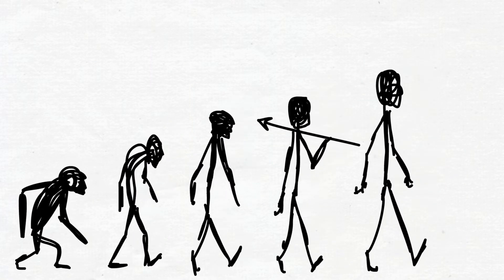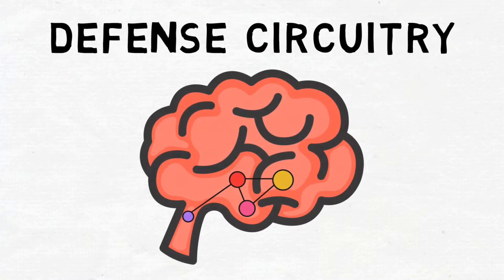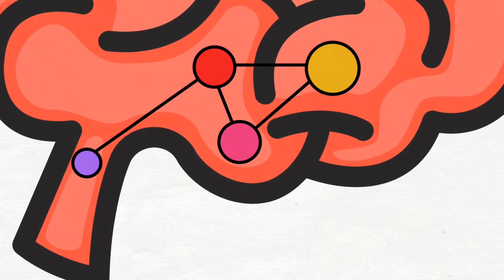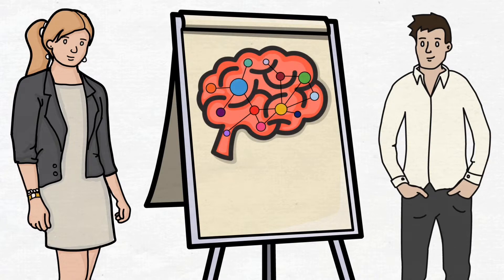Thanks to evolution, all of our brains have what neuroscientists call a defense circuitry. Circuitry just means a collection of brain areas that work together to perform certain functions. Scientists understand that our brains have many circuitries, just as there are circuitries inside of our smartphones and computers.